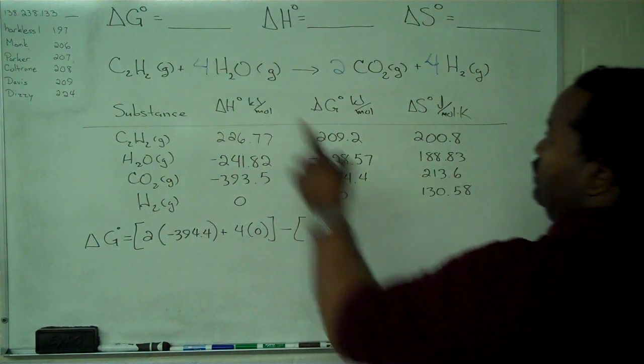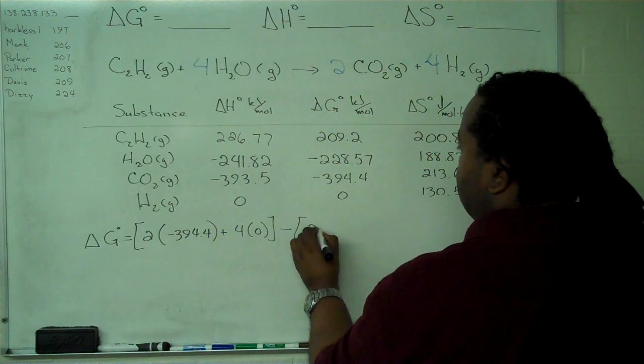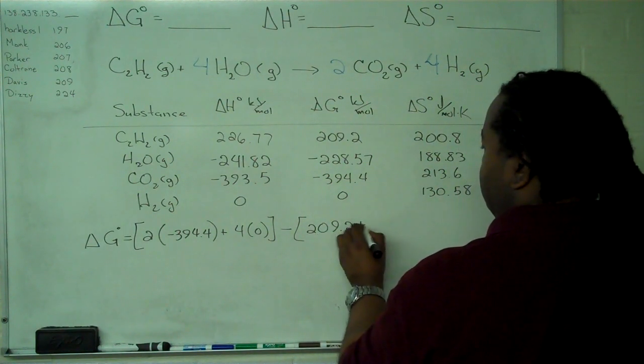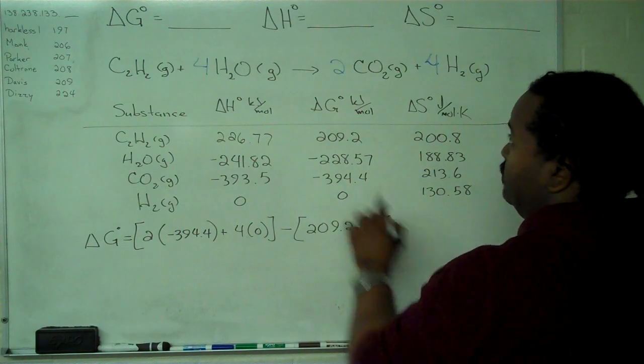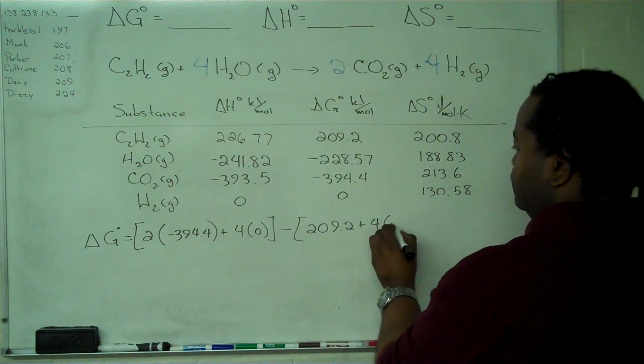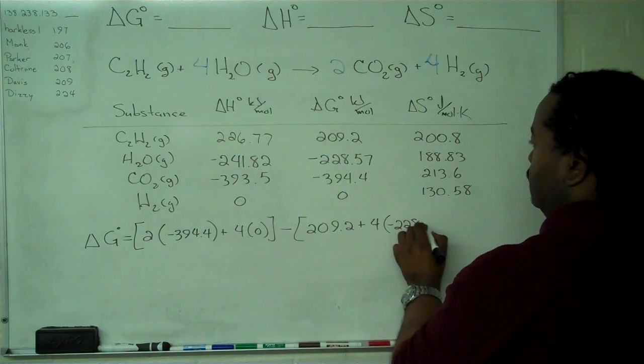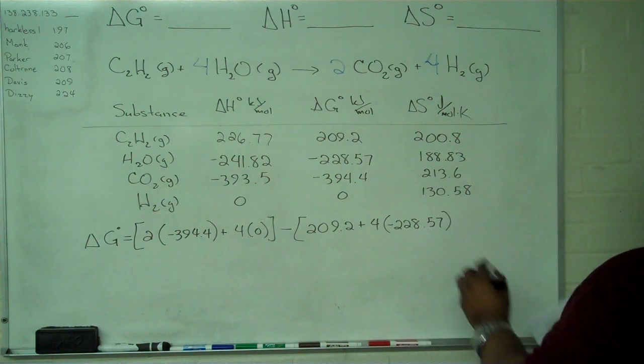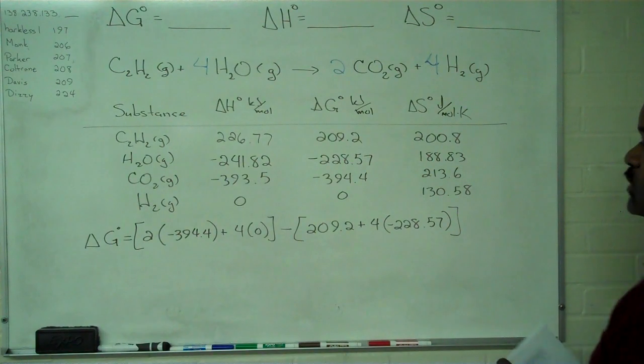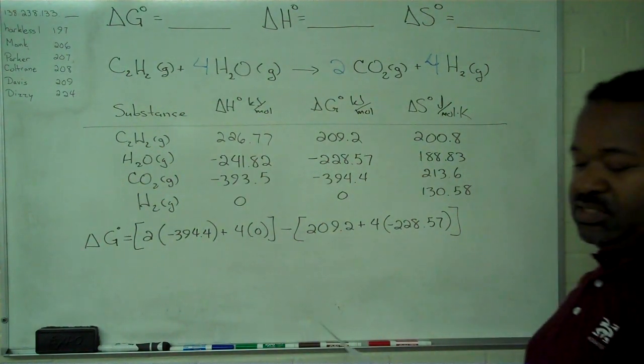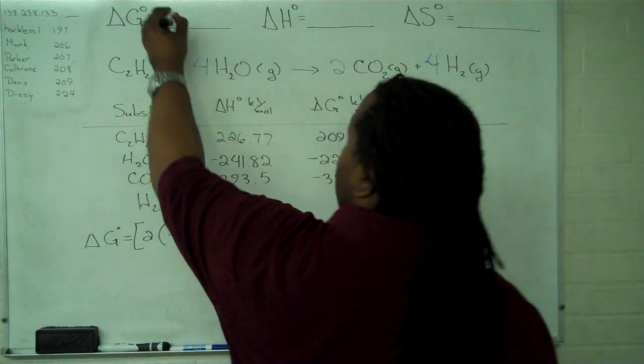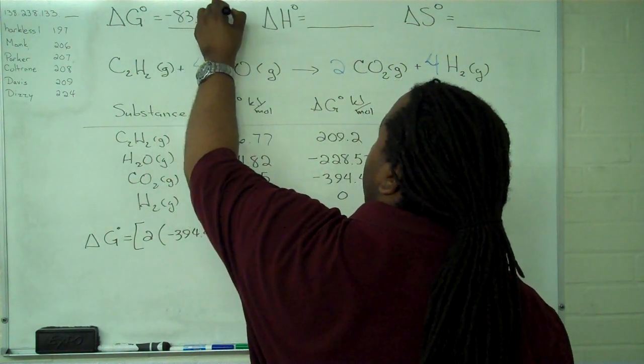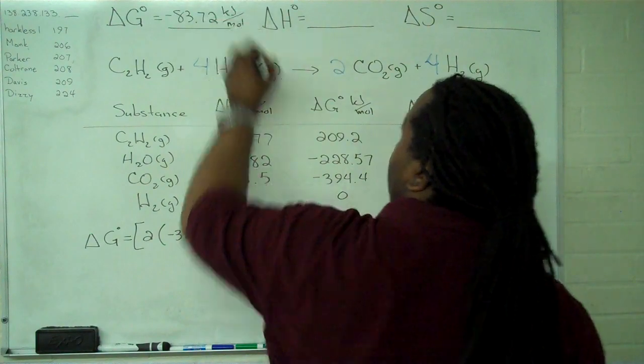There's our products. And now for our reactants, we just have one times our C2H2 and four times the value for our gaseous water. So if we simplify this all the way out, we get a value of negative 83.72 kilojoules per mole.